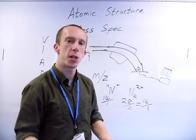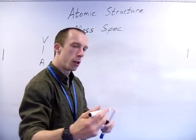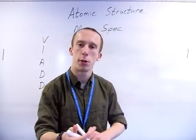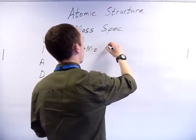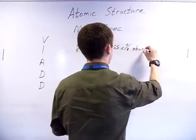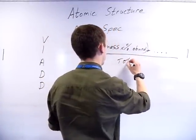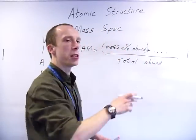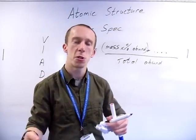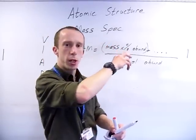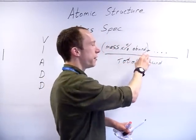The other thing you'll have to do with the mass spec is the actual calculations. You may either be given numbers or given an actual spectra readout and asked to interpret it. If you want to work out the average mass - so the relative atomic mass of a sample of an element which contains isotopes, like chlorine - then you look for the mass of each isotope times its percentage abundance, do it for however many isotopes you've got, and then divide by your total abundance.